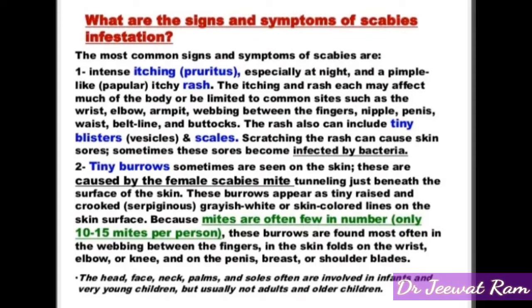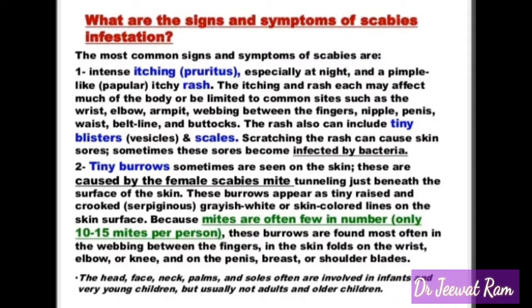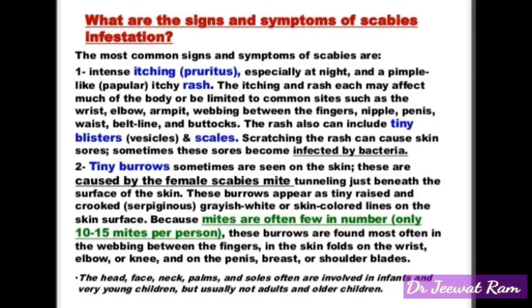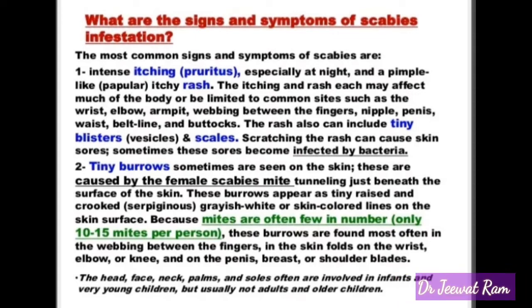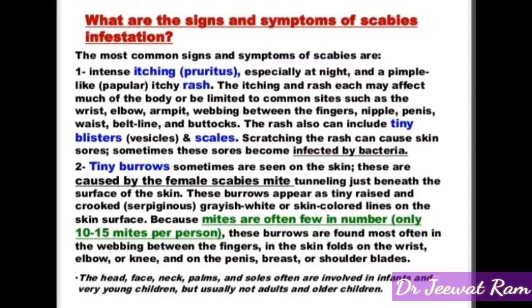Tiny burrows sometimes are seen on the skin. These are caused by the female scabies mite tunneling just beneath the surface of the skin. These burrows appear as tiny, raised, and crooked grayish-white or skin-colored lines on the skin surface. Because mites are often few in number — only 10 to 15 mites per person — these burrows are found most often in the webbing between the fingers.